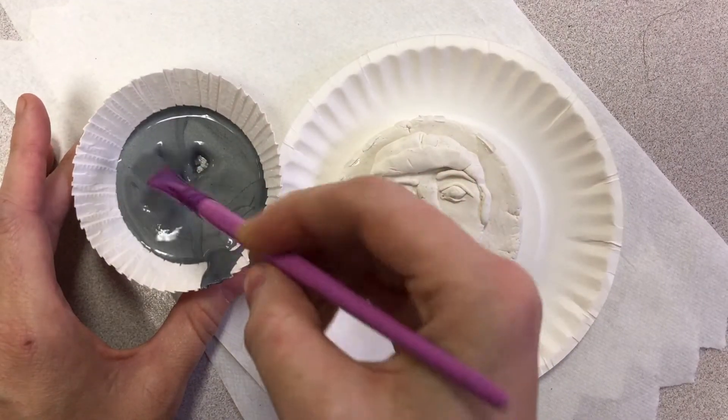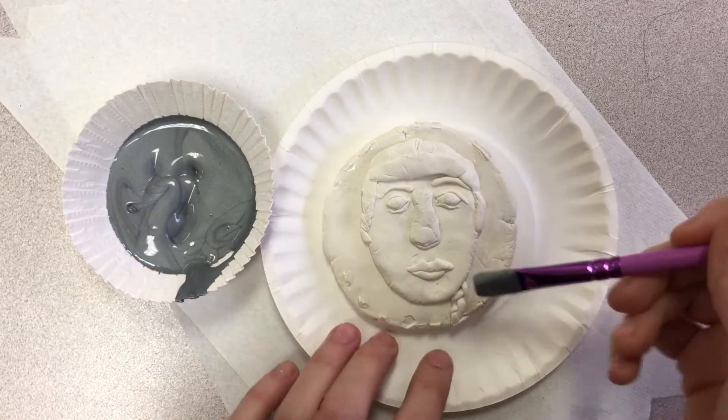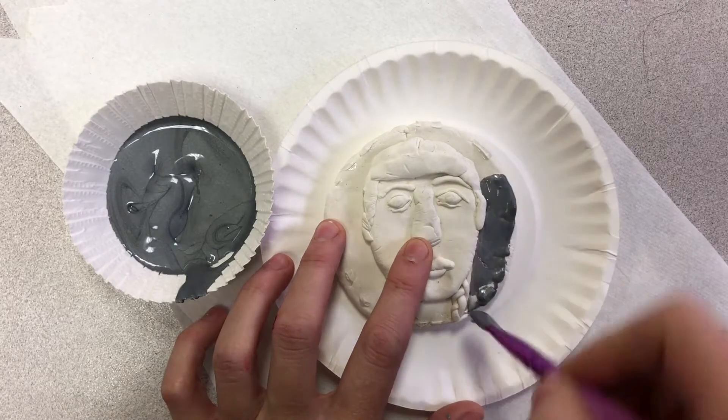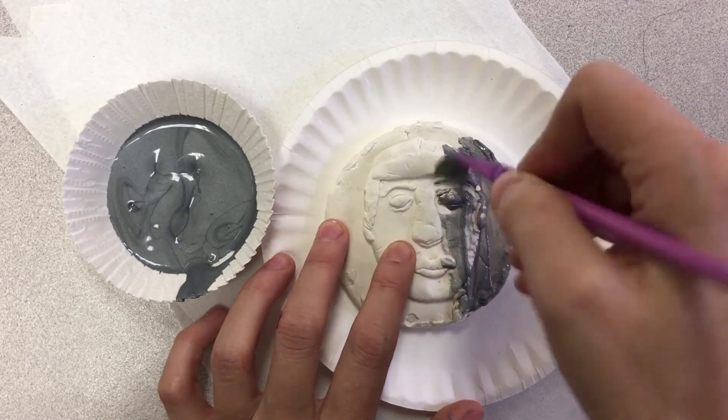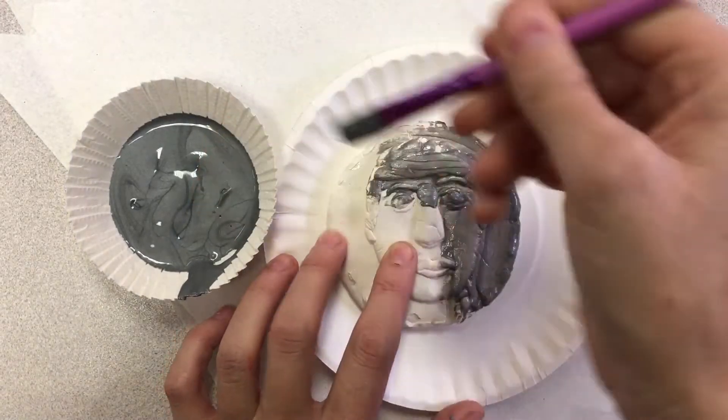All right, we are going to paint our medallion or coin. You'll choose either silver or gold paint. I've chosen silver and we're basically just going to coat the entire surface with this paint.